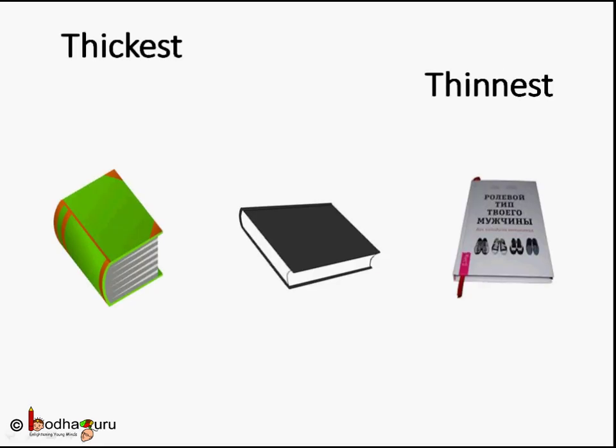The green book is the thickest. It has lots of pages. The white book is the thinnest. It has only few pages. The black book is thicker than the white book but thinner than the green book.